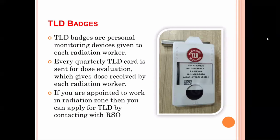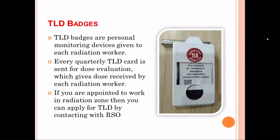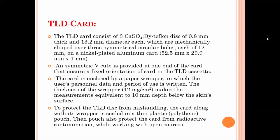The quarterly periods are January–March, April–June, and July–October. Every quarter, you must send your TLD badge to the AERB. They measure the dose and send back the report to your local department. To apply for a TLD badge, contact your Radiation Safety Officer (RSO) and submit your form to AERB. In India, the Radiation Monitoring Laboratory performs the measurements and provides radiation data.